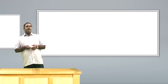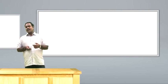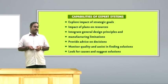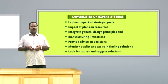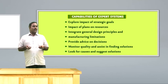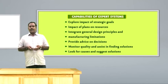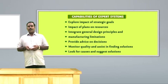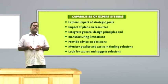You should also know the capability of the expert system. First, it can explore impact of strategic goals. Then, impact of plans on resources — how optimized resources can be used for agriculture. Then, integrated general design principles and manufacturing limitations, normally used in the automotive and aeronautic sectors. It will provide advice on decisions, normally used in agriculture. Then, monitoring quality and assisting in finding solutions — this is very useful in aeroplanes, where the system will automatically detect a problem and report to the pilot. These are the important capabilities of the expert system.